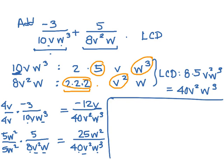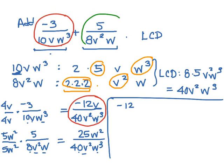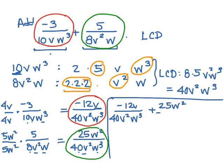So now I can rewrite both of these in terms of my common denominator. I have negative 12v over 40v squared w cubed, and I'm going to add 25w squared over 40v squared w cubed.